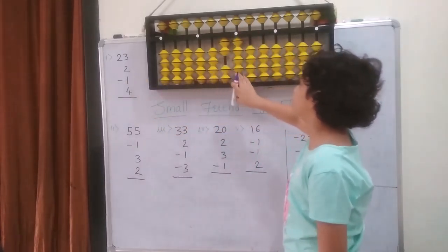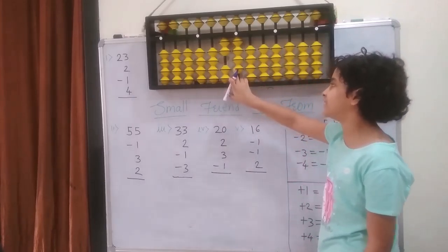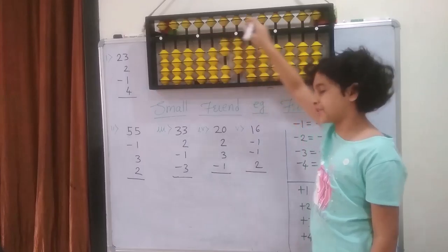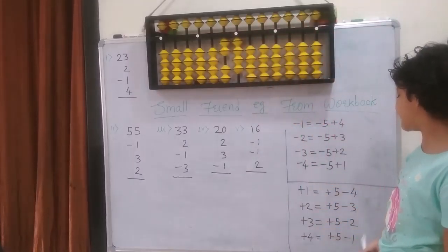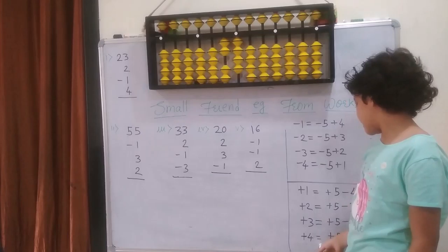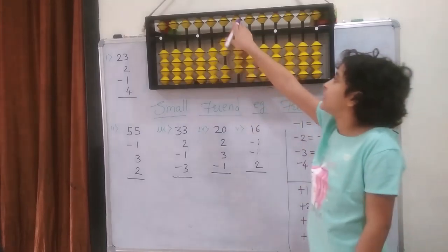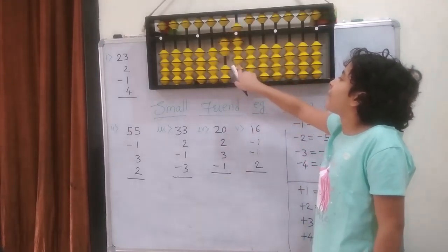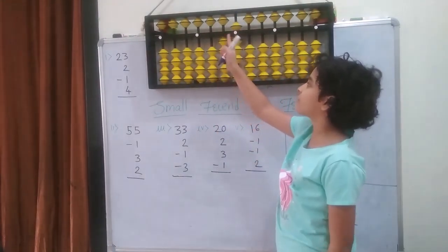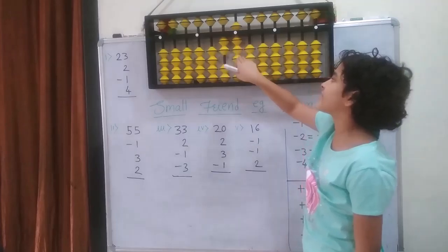Then I am going to add 4. I cannot because I don't have enough beads. So the 5 is available for addition. So I am going to use the addition formula, which is plus 4 equals to plus 5 minus 1. Plus 5 and minus 1. So the answer is 1, 2, 5, 6, 7, 8 — that is 28.